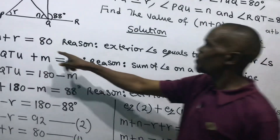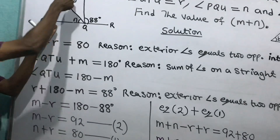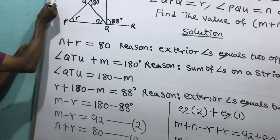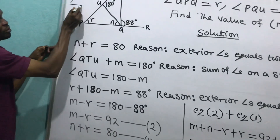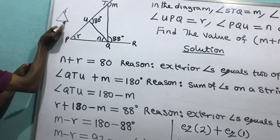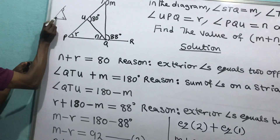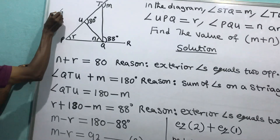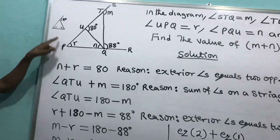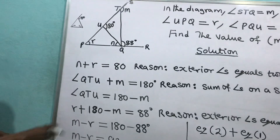That's the reason why I say R plus N equals to 180. If you look at that diagram, this is a triangle. This interior and the opposite interior — N and R — equals the 180. That's 80 degrees. The opposite interior equals the exterior angle.